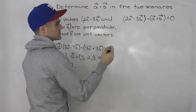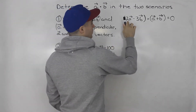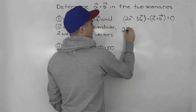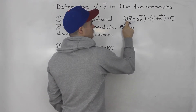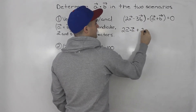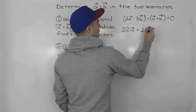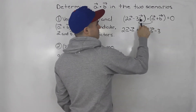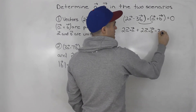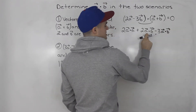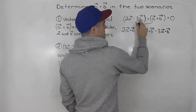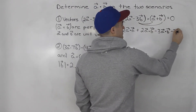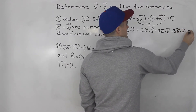We can expand all of this using dot product rules — it's almost like we are foiling this out. So we take 2 times vector a dot vector a, then 2 times vector a dot vector b, then minus 3 times b dot vector a — which is the same as a dot vector b — and then minus 3 times vector b dot vector b. And that has to equal zero.